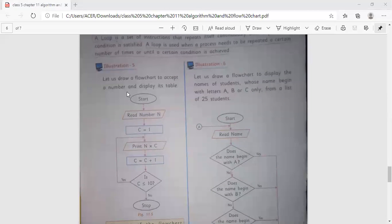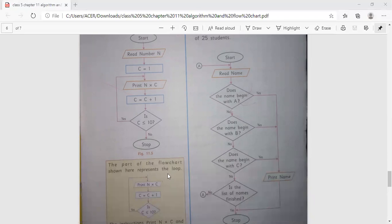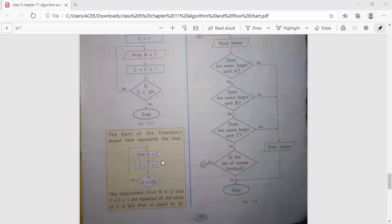Illustration 5: Let us draw a flowchart to accept a number that displays its table. Start, read number N. C equals N. Print N into C. C equals C plus 1. If C is smaller than 10, then stop. The part of the flowchart shown here represents the loop. That is print N into C, C equals C plus 1. If C is smaller than 10, the instructions are repeated till the value of C is less than or equal to 10.